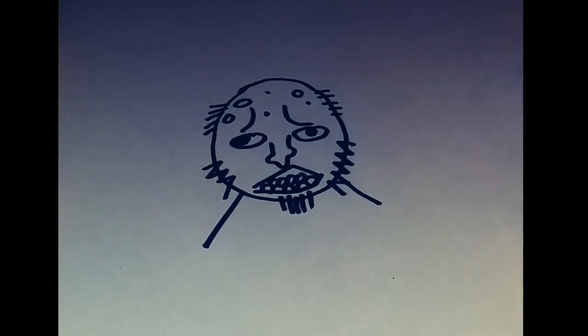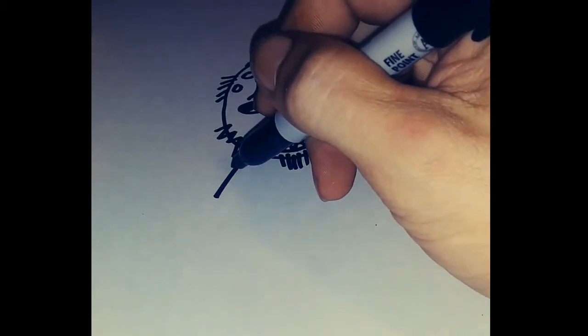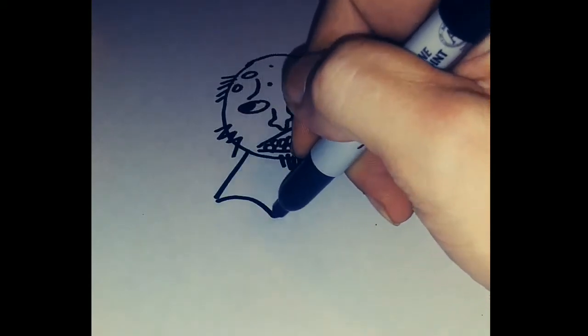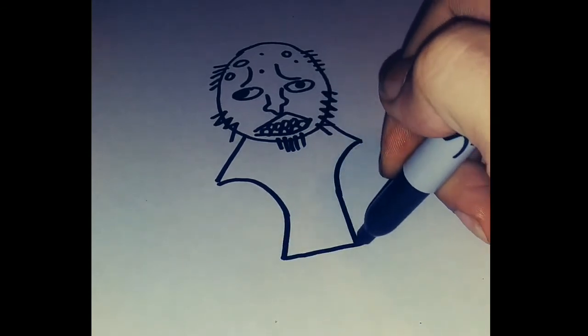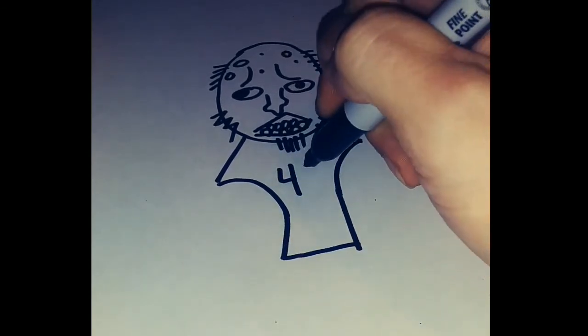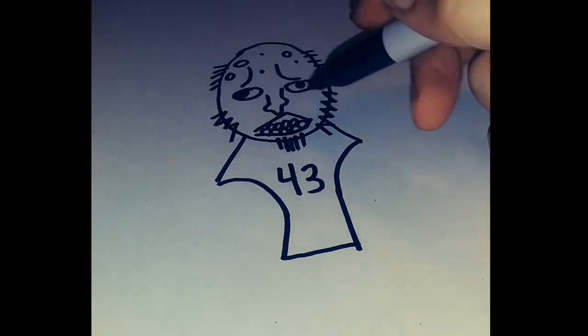Make sure that the shoulders are not there at all, and that they just come down at a 45 degree angle. Of course, you want to add the 43 on the jersey.